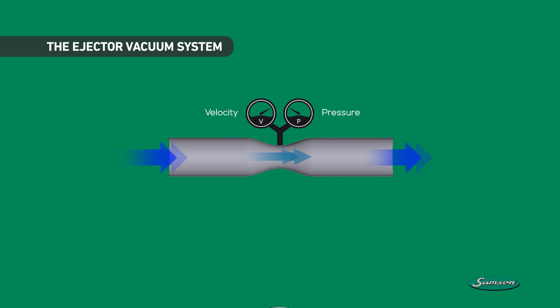A simple vacuum pump can be established by adding another tube to the system. Since the pressure inside this tube is now lower than the surrounding atmospheric pressure, the pressure will push the fluid into the tube.